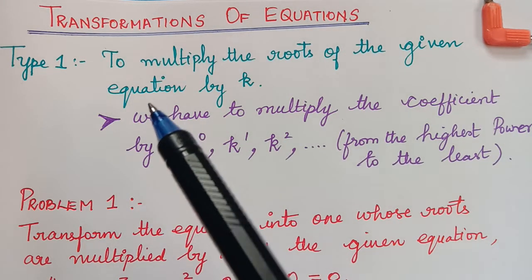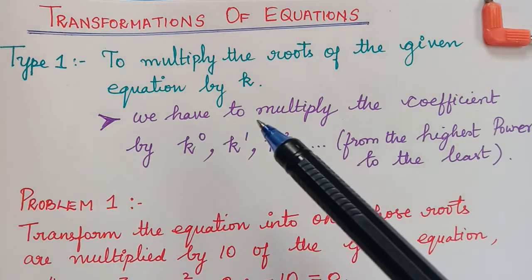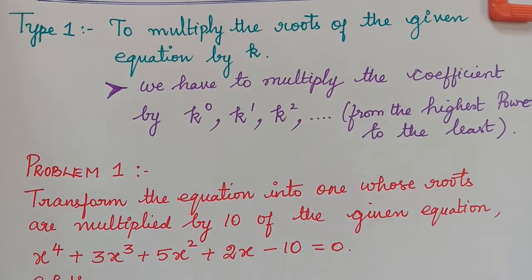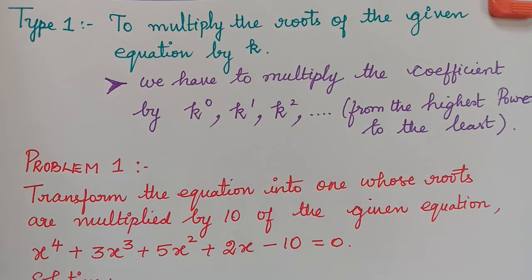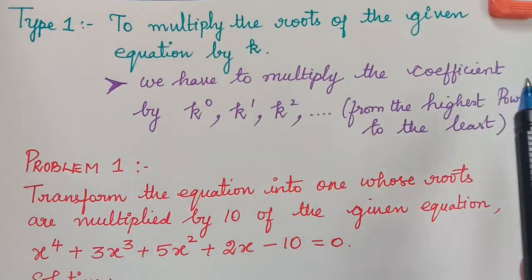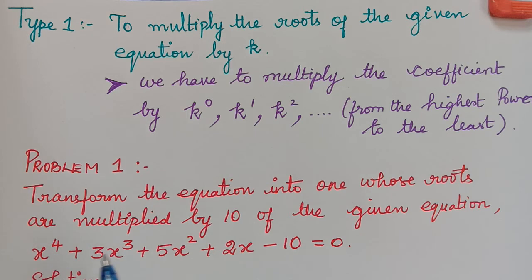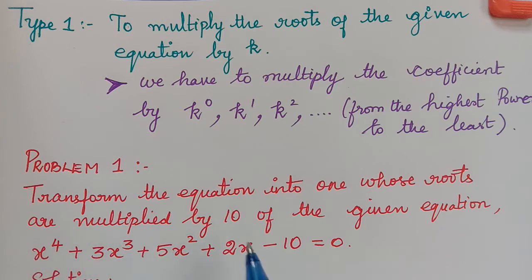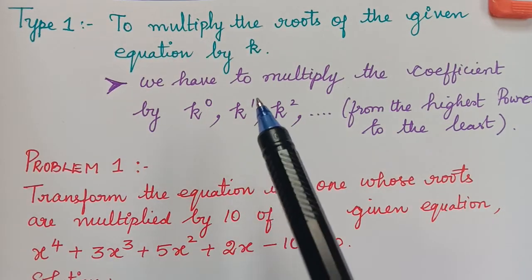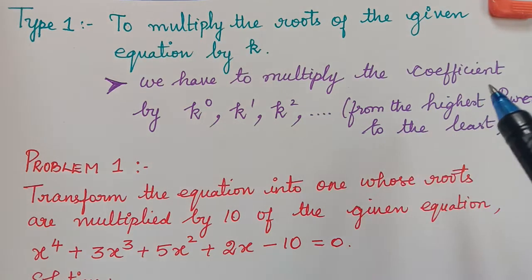The first type is to multiply the roots of the given equation by k. If an equation is given to us, we have to transform it into another equation whose roots will be multiplied by k. In order to do that, we have to multiply the coefficients — for example, x power 4, x cube, x squared — by k power 0, k power 1, k squared, etc.